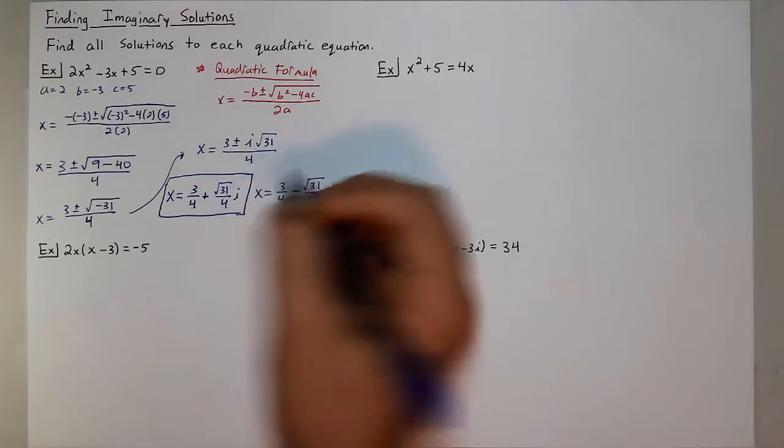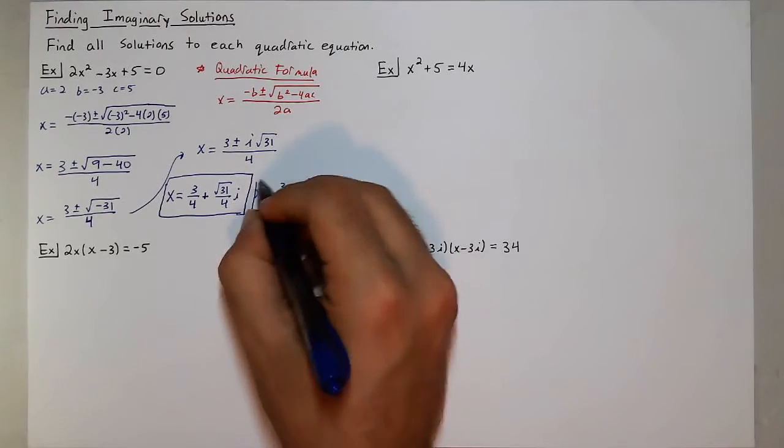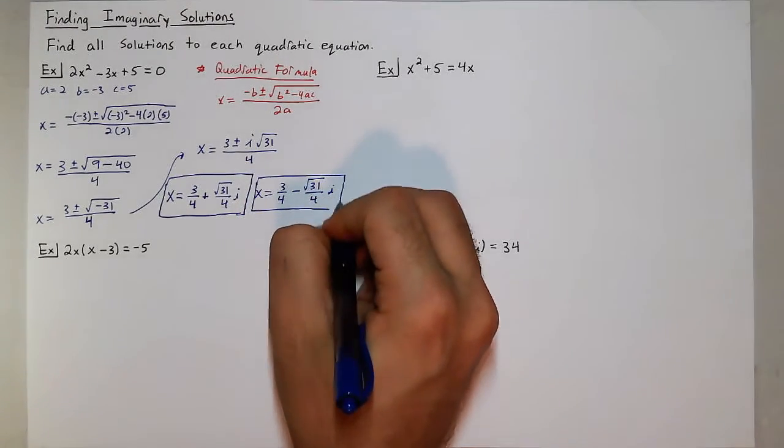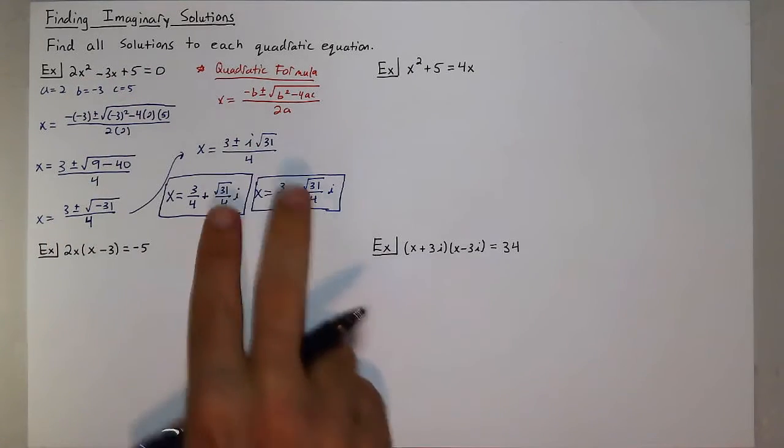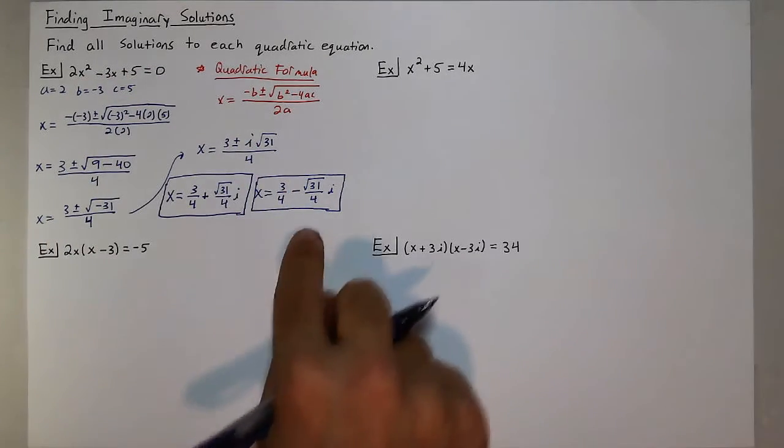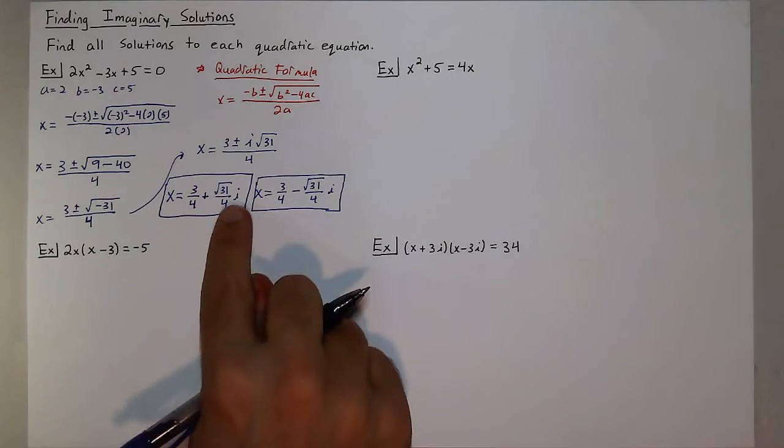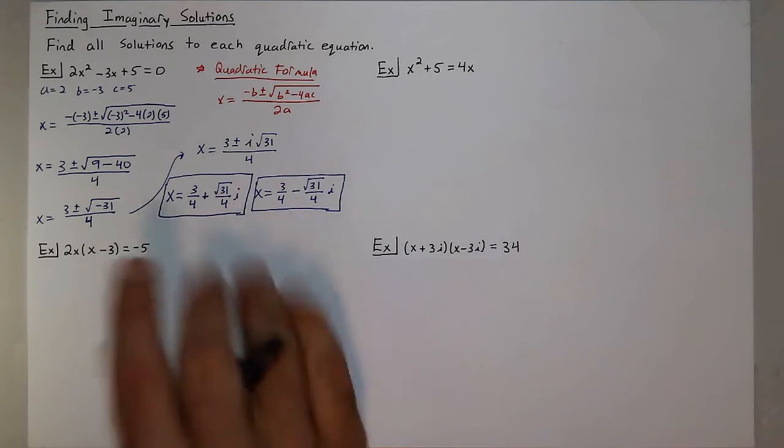This means we wouldn't see these solutions on a graph. Because normally, whenever a quadratic is equal to 0, that means at those particular x values it's crossing the x-axis. But here we wouldn't see where that happens. It actually happens in the complex plane.